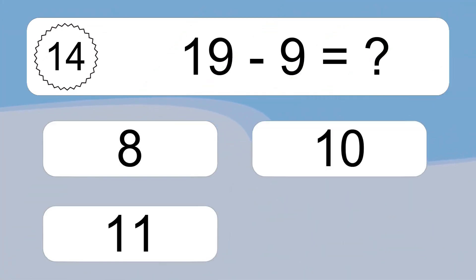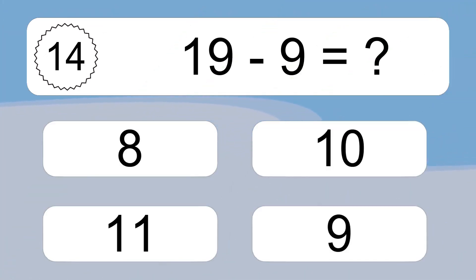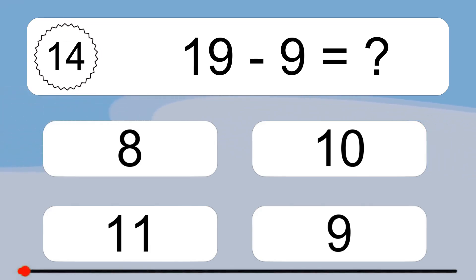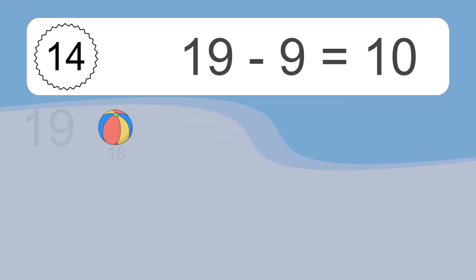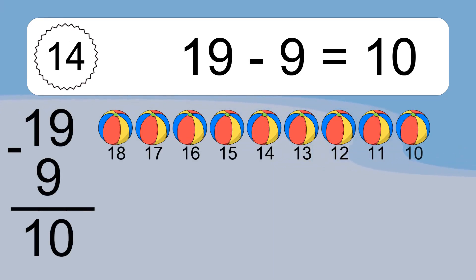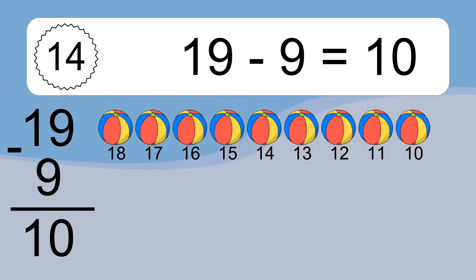19 minus 9 equals what? 19 minus 9 equals 10. Let's count it: 18, 17, 16, 15, 14, 13, 12, 11, 10.